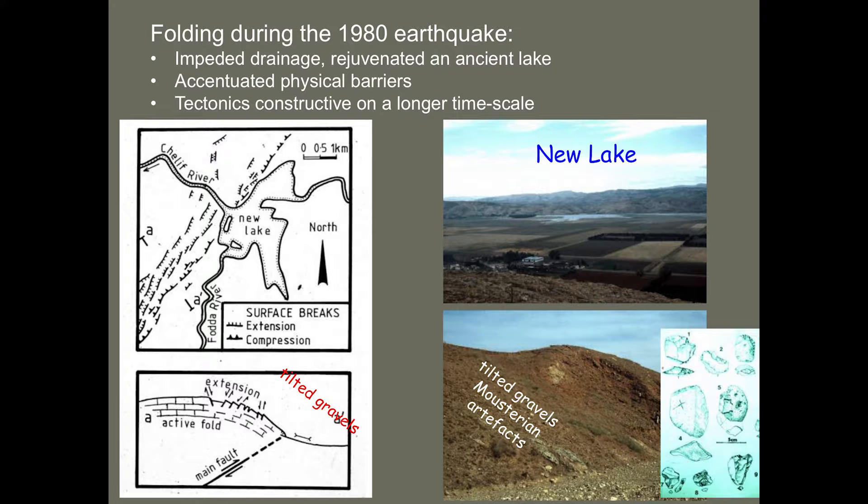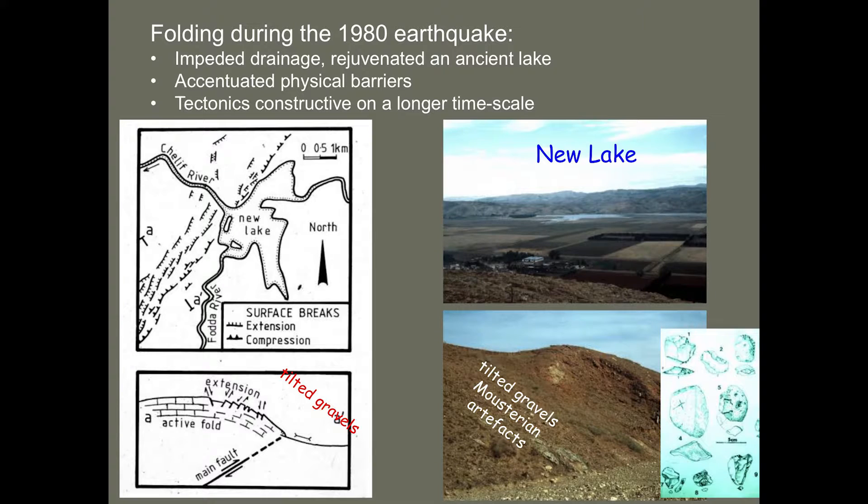The gravels that were progressively tilted at the edge of the fold contained Mousterian artefacts, so clearly this region has been attractive over tens of thousands of years. There's a very important point about time scale: the earthquake event is hugely destructive, but in the longer run, that event and others like it actually have a constructive effect in terms of an ecology that is beneficial to human settlement. Change the time scale and you see something different — this is a message that goes through a lot of archaeological thinking.